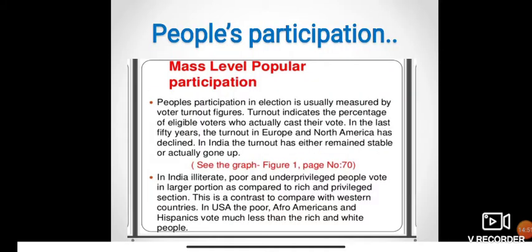Coming to our last topic — people's participation: how people participate in elections through mass-level popular participation. People's participation is measured by voter turnout figures. Turnout indicates the percentage of eligible voters who actually cast their vote. In the last 50 years, turnout in Europe and North America has declined, whereas in India the turnout has either remained stable or actually gone up. In India, illiterate, poor, and underprivileged people vote in larger proportion compared to the rich and privileged section.